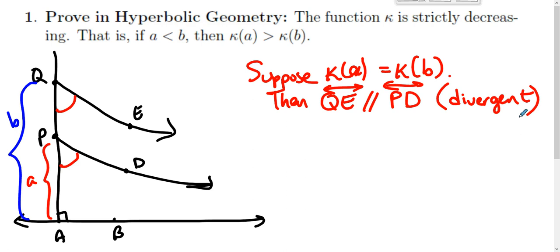And this is that theorem that we had set up where if the alternate interior angles are congruent, in this case corresponding angles does the same thing, then we have parallel lines that admit a common perpendicular. And if they admit a common perpendicular, then they are divergent parallels.